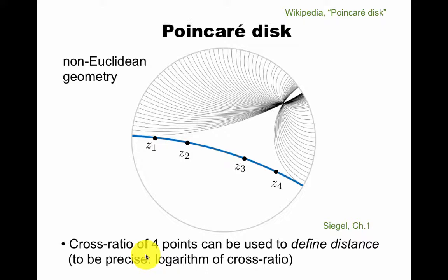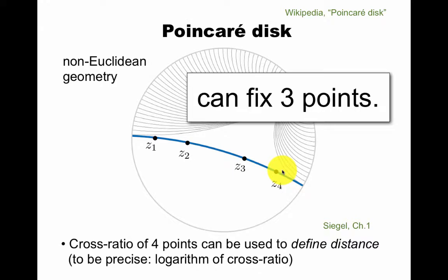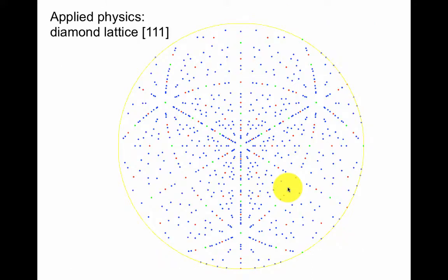And the cross ratio of four points can be used to define distance. To be precise, it's the logarithm of the cross ratio that's distance. What that means for us is that because the cross ratio is invariant under these fractional linear transformations, distance along this line really only depends on one of these four variables. In other words, we can fix three points because you can transform from these four variables to this one variable, the cross ratio. You can fix three of these points and vary one of them, and that can control your cross ratio. This is the underlying geometric reason why we can fix three points.